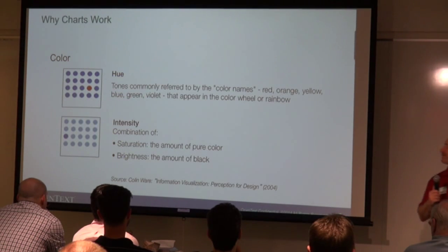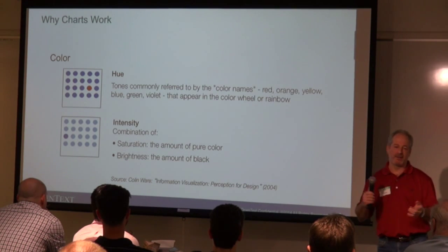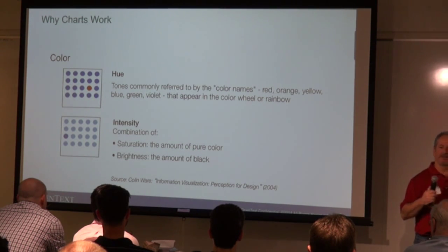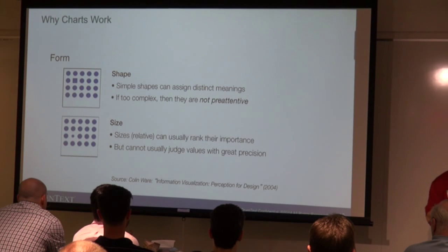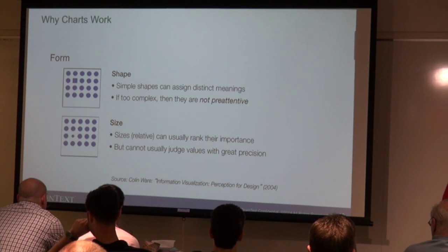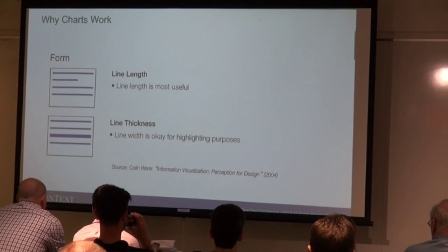Color has two types: one is hue — what color, blue or red — and then there's intensity, a darker versus a lighter shade. When it comes to form, there are several: shape (squares versus circles), size (a smaller circle versus a larger circle), line length, and line thickness. These are all different pre-attentive attributes.